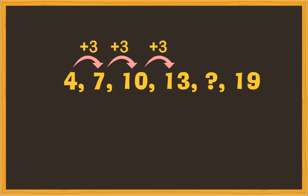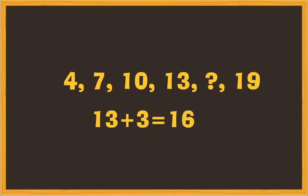So, the rule is to add 3. Keep adding 3 to the numbers to find the missing number. So, the missing number will be 13 plus 3 equal to 16.